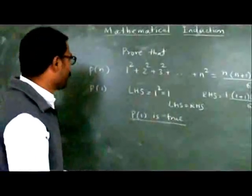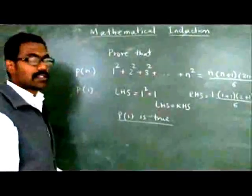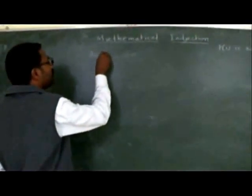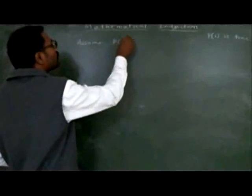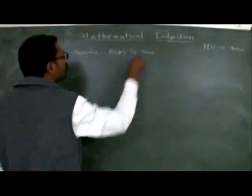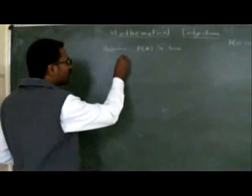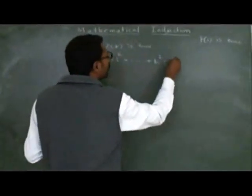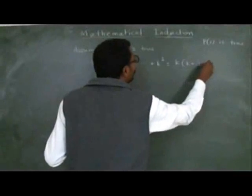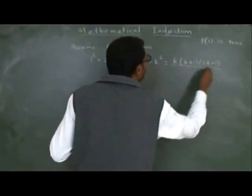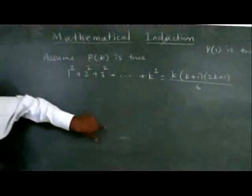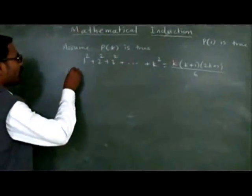In the second step, we assume that some P(k) is true, where k is a natural number. If P(k) is true, we are saying that 1² + 2² + 3² + ... + k² = k(k+1)(2k+1)/6. Now, given that P(k) is true, let us check whether P(k+1) is also true.